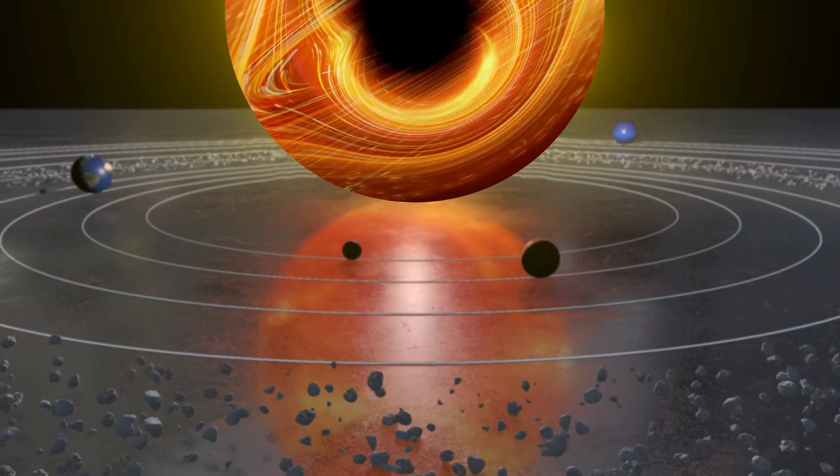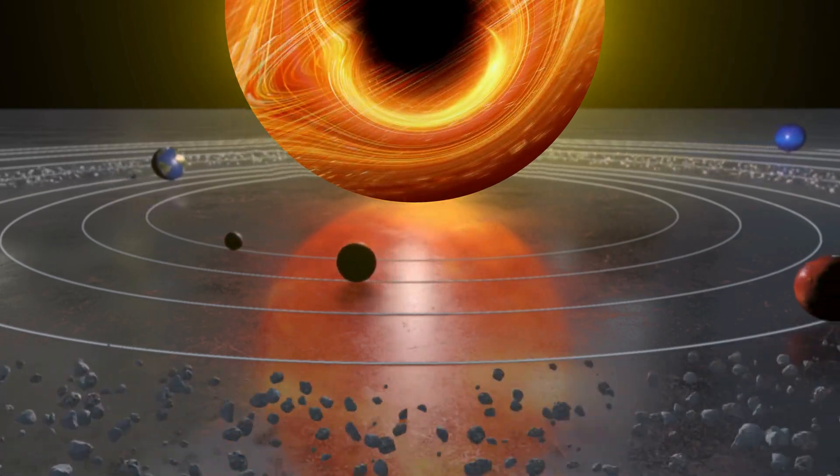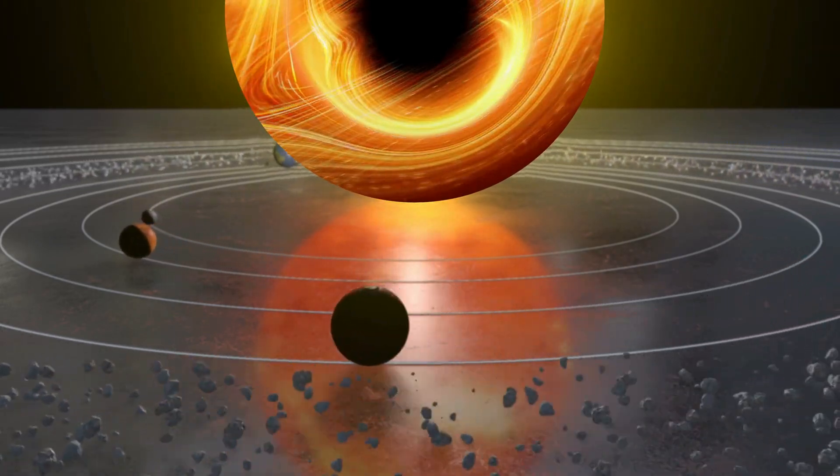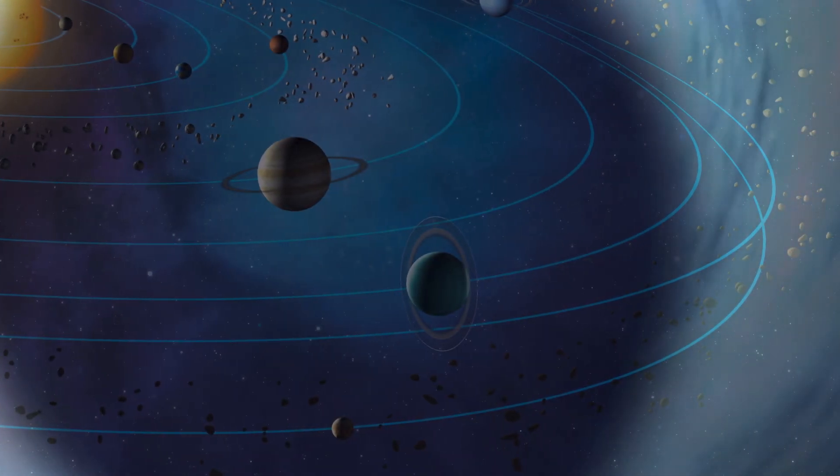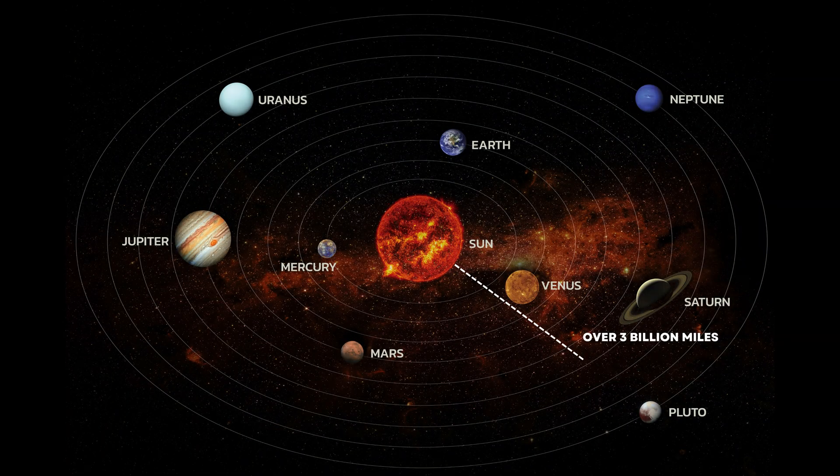To put this into perspective, if we placed a supermassive black hole like TON 618 in the center of our solar system, its event horizon would extend well beyond the orbit of Pluto, which is over 3 billion miles.